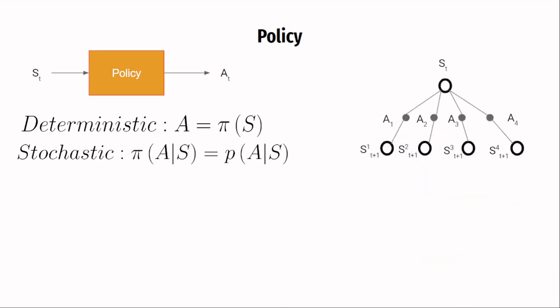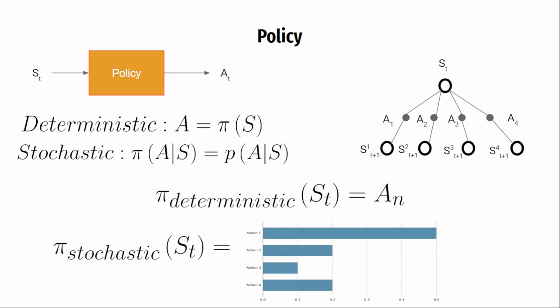For example, let's say there are four actions in a problem. Deterministic policy will take in a state and return an action to be taken, whereas a stochastic policy will return the probability of all the actions in the problem.